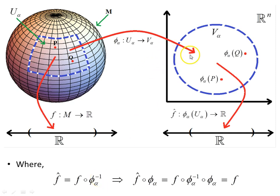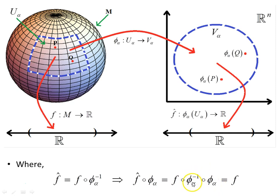Phi_alpha inverse is the map from the set V_alpha back to the manifold. Since U_alpha is contained in the domain of f, by the same reasoning, f-hat composed with phi_alpha equals f composed with phi_alpha inverse composed with phi_alpha, which gives us the identity, taking us back to f.